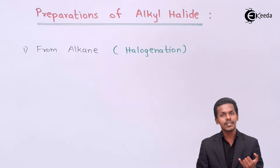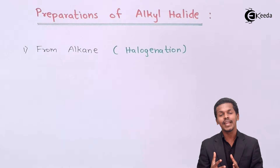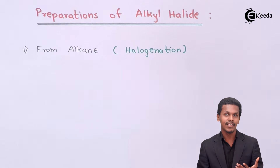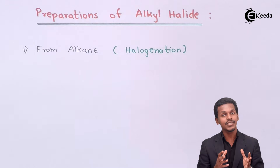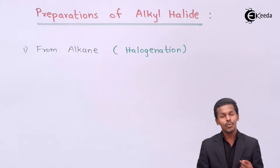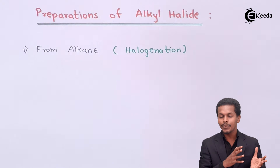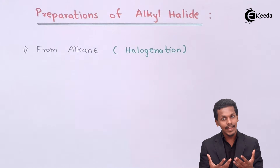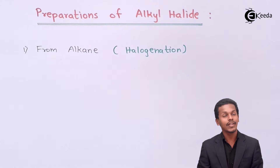Talking about fluorination — fluorination can happen, but the products formed in that case are more hazardous and very corrosive in nature. That is the reason fluorination is not widely used. However, chlorination, bromination, and iodination can be done in this process, and we can easily prepare a desired alkyl halide from a given alkane.